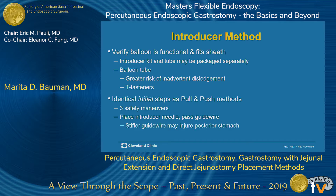The introducer method is a little different because the tube and kit are generally not packaged together. Make sure the introducer kit you have is made to fit the tube you want to place. In addition, these are generally balloon tubes, so make sure your balloon is functional. These balloon tubes have a slightly greater risk of inadvertent dislodgement, especially in patients who are hospitalized or in long-term care facilities, as nurses sometimes inadvertently use those balloon ports for aspiration and medication installation. I like to use the T-fasteners as an extra safety measure. Before making my incision, I make sure my gastrostomy tube actually fits the sheath and that the balloon is functional.